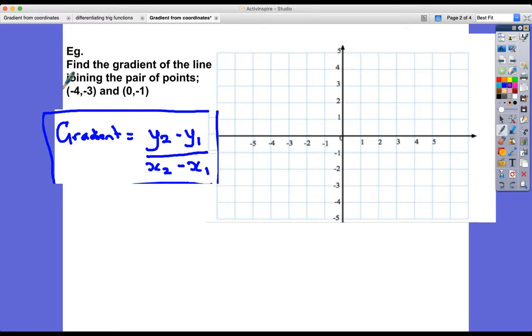So we've got, this can be (x1, y1). Not very clear, but yeah. (x2, y2). And so y2 is minus 1. So here are the gradients. Let's get these. y2 is minus 1. And we're going to subtract y1, which is minus 3.